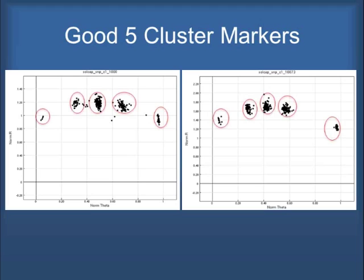Candy Hansi, in looking at the data coming out of Solcat, we have the russet mapping population plus we also have some tetraploid genotypes in the panel. She has been able to look at the data from a tetraploid point of view.